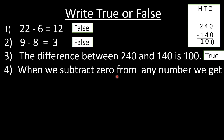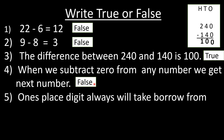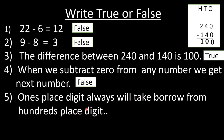Question number 4: when we subtract 0 from any number, we get the next number — true or false? This statement is false, because when we subtract 0 from any number, we get the same number. Question number 5: 1s place digit always takes borrow from 100s place digit — false, because 1s place always takes borrow from 10s place.